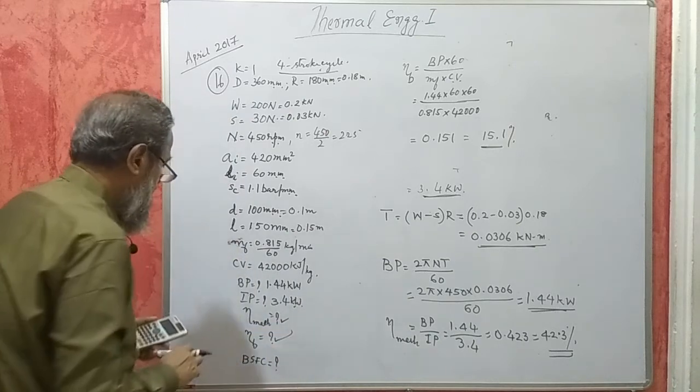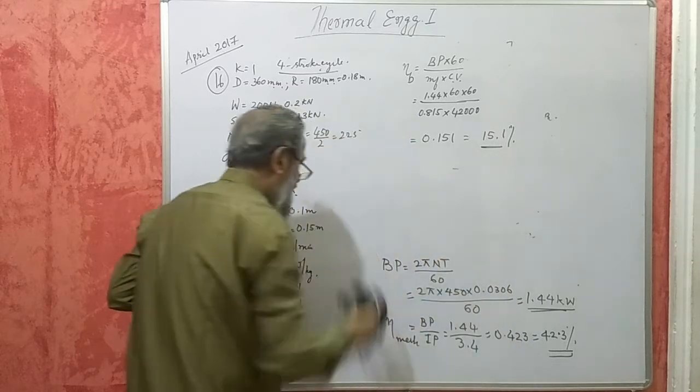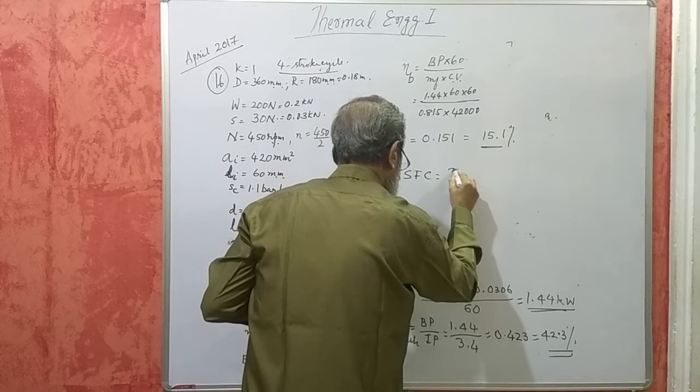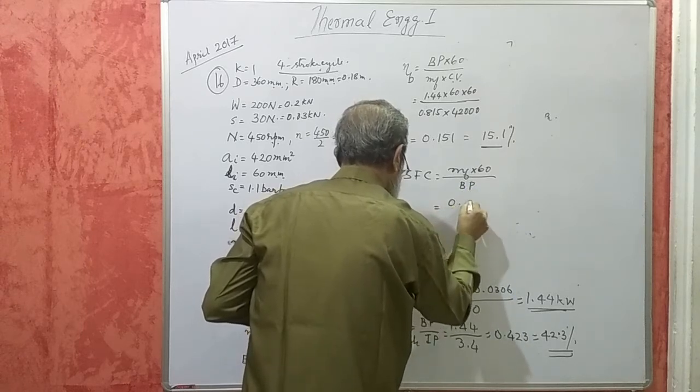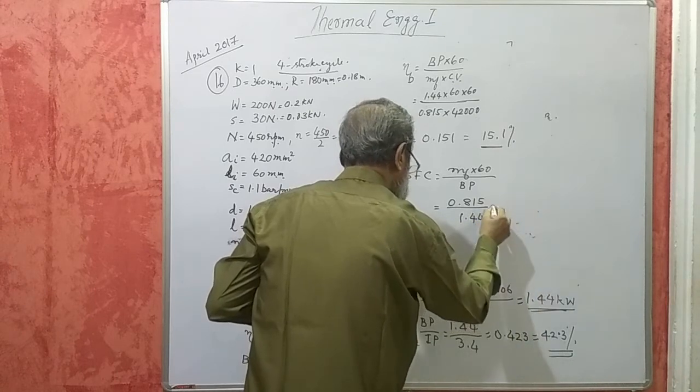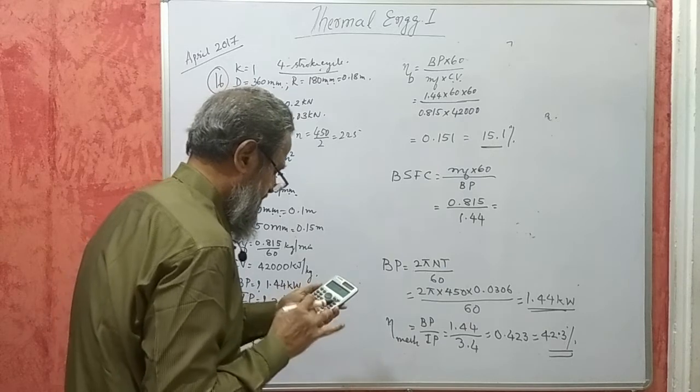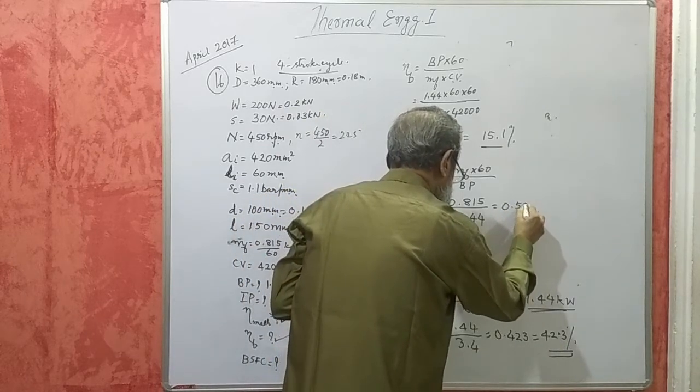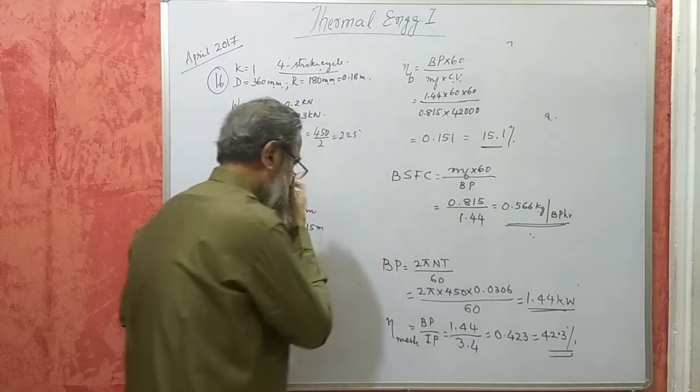BSFC will be MF into 60 divided by BP. That is 0.815 divided by 1.44 will give 0.566 kg per BP per hour. This is BSFC. That completes that problem.